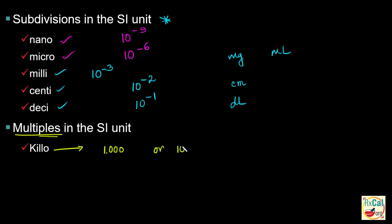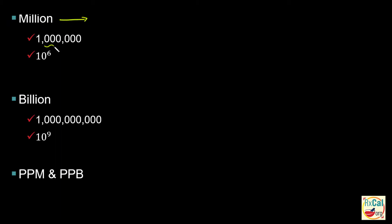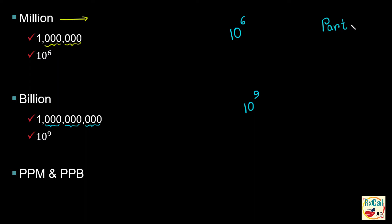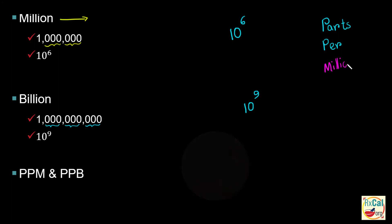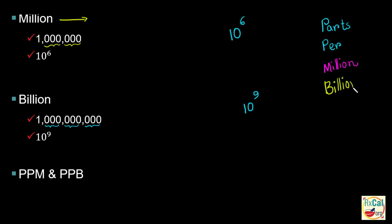We don't use a lot of multiples in pharmacy except kilo. Kilo is 1,000 — for example, kilogram is 1,000 grams. Note that 1,000 has 3 zeros, or 10 to the power 3; therefore, 1,000,000 (million) has 6 zeros, or 10 to the power 6. Billion is 1,000,000,000 — that is, a thousand thousands of thousands — giving 9 zeros, or 10 to the power 9. PPM and PPB are units used to express very low concentrations. For example, heavy metals in tap water may be expressed in PPM, and pesticides in imported food in PPB — meaning parts per million and parts per billion, respectively. We will have calculations involving PPM and PPB in later discussions.